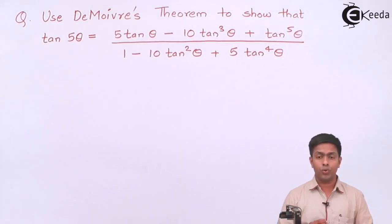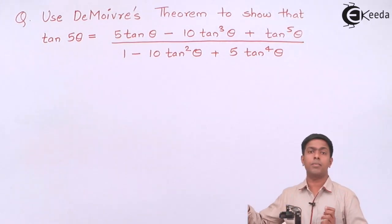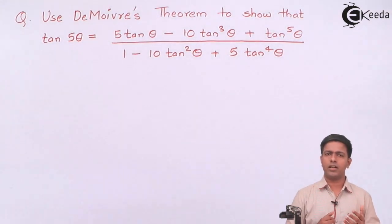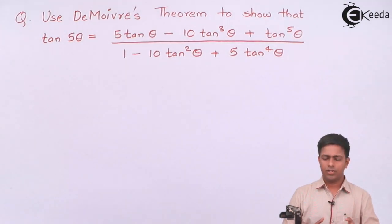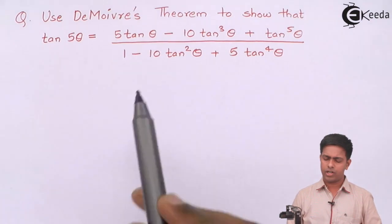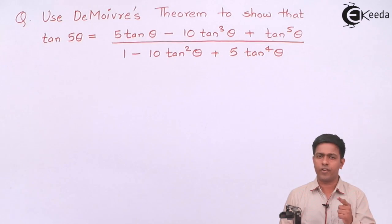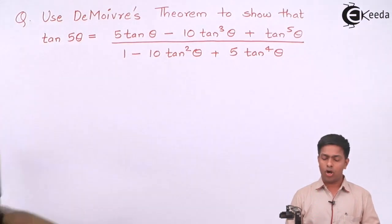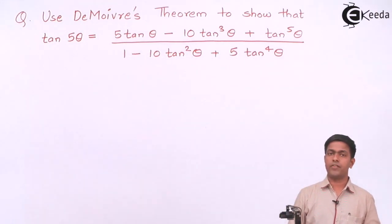We have to use De Moivre's theorem to show that tan(5θ) equals a given expression. On the left-hand side you can see a multiple of θ — 5θ means 5 times θ — whereas on the right-hand side all angles are θ but the powers of the trigonometric functions are 3, 5, 2, 4, and so on. So on the left-hand side we have a multiple of θ, whereas on the right-hand side we have powers of trigonometric functions.